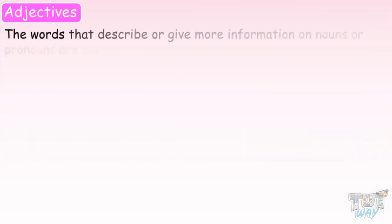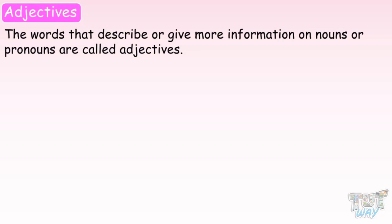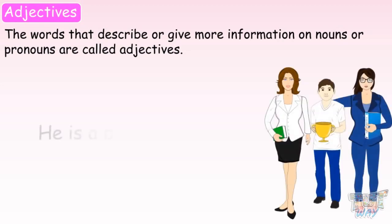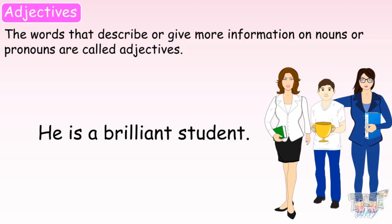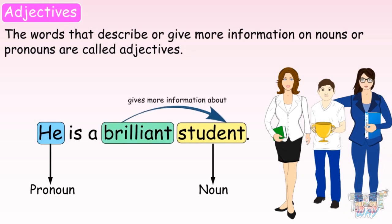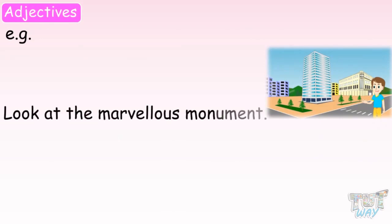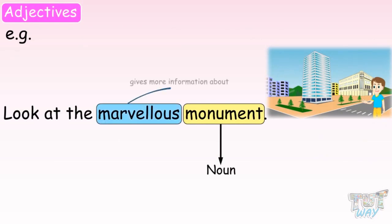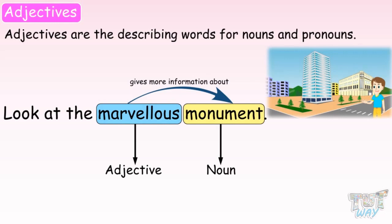First of all, let's revise what are adjectives. The words that describe or give more information on nouns or pronouns are called adjectives. For example: 'He is a brilliant student.' Here, the word 'he' is a pronoun, 'student' is a noun, and the word 'brilliant' is describing the noun student. Another example: 'Look at the marvelous monument.' Here, 'monument' is the noun, and the word 'marvelous' gives more information about the noun monument, so 'marvelous' is an adjective. So, adjectives are the describing words for nouns and pronouns.